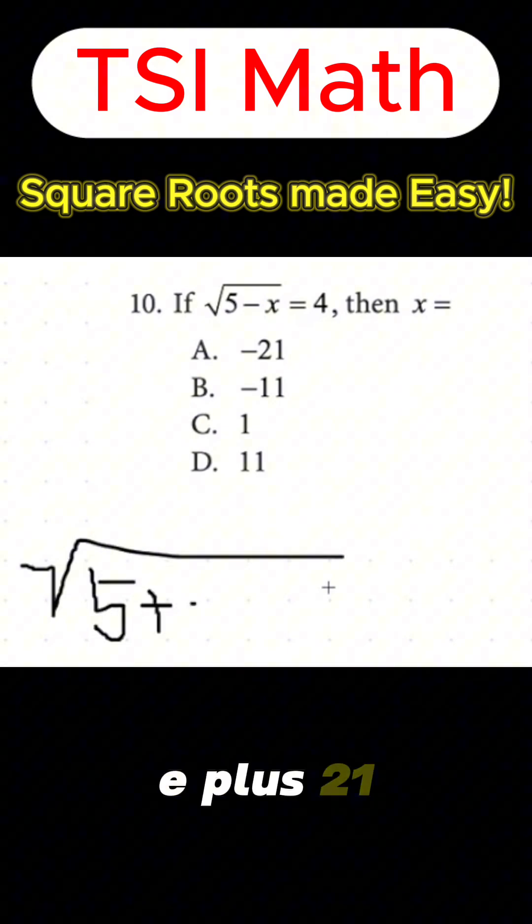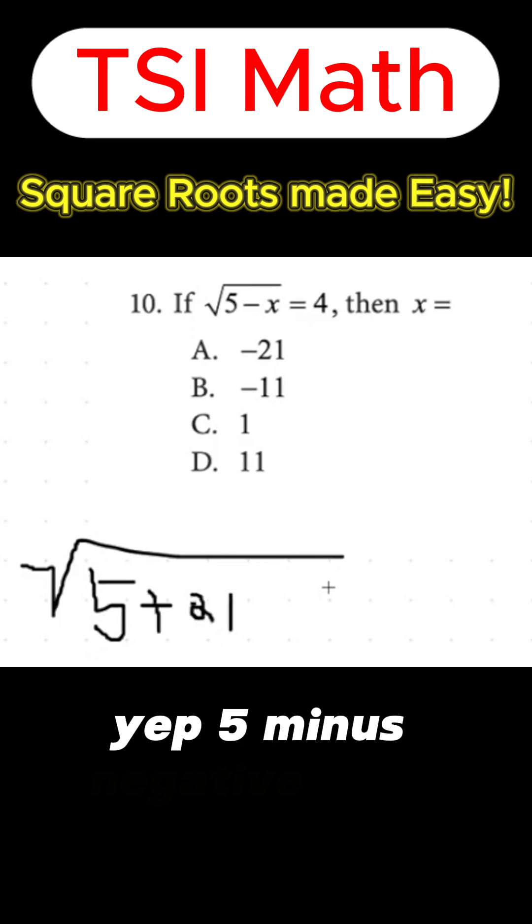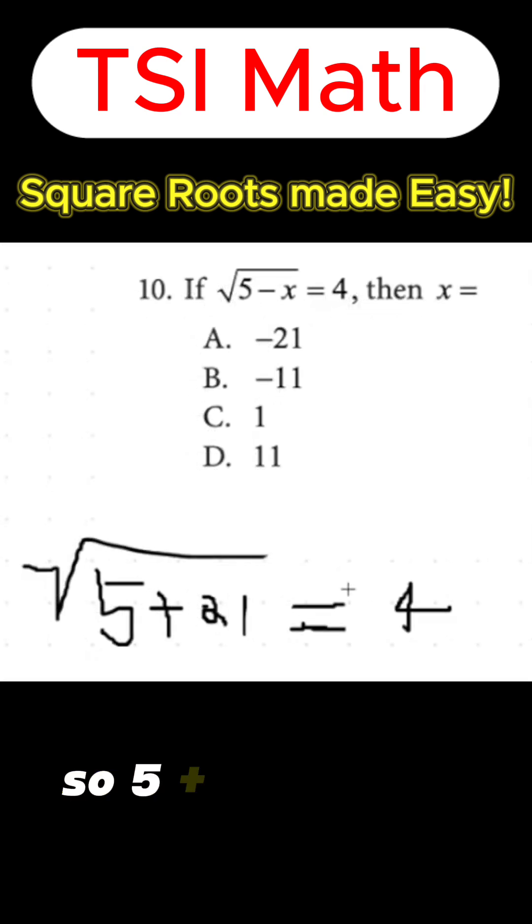5 plus 21. Yep, 5 minus negative 21 is 5 plus 21. So 5 plus 21 is what? 5 plus 21 is 26.